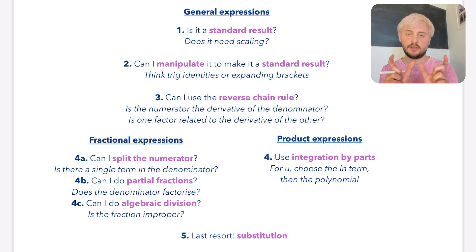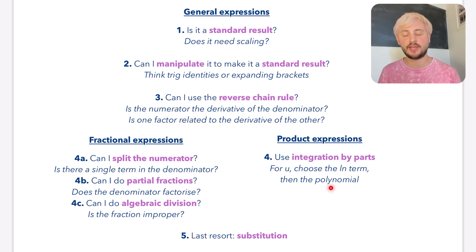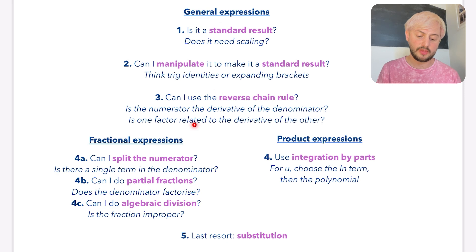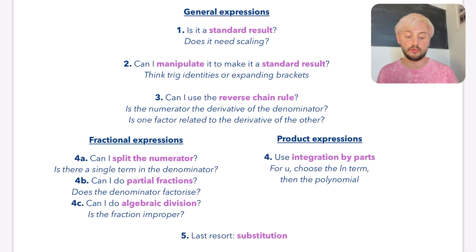When I say product expressions, I mean an expression where there are two things being multiplied together. When you apply integration by parts, for the U term you should choose the LN term as the priority, then after that a polynomial term — you shouldn't really pick the trig term. If all answers to all of these questions is no, your last resort is substitution. Substitution should not be the go-to thing; it really is your last resort. So this is the flow of different things we've got here.